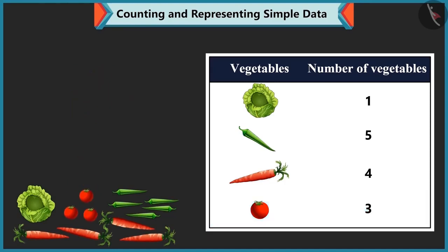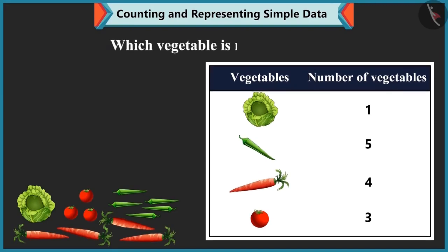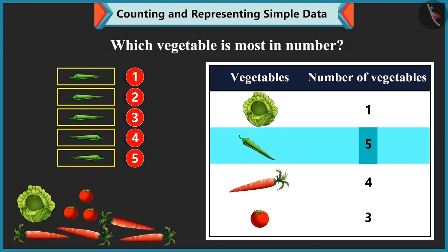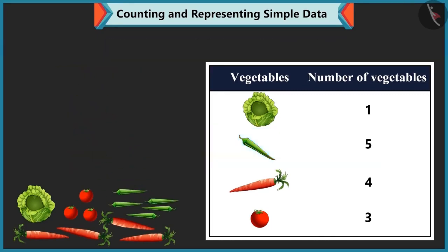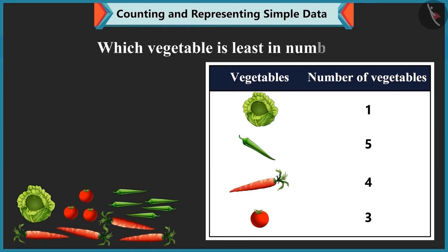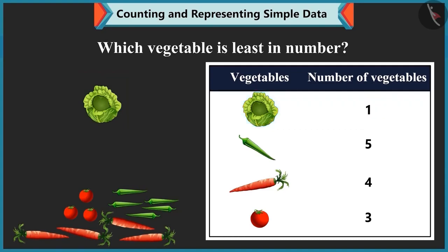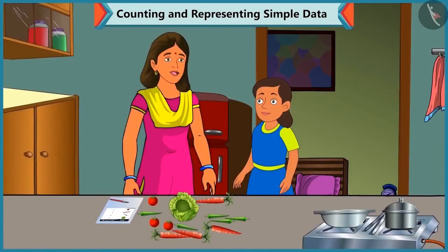Mummy asks which vegetable is most in number. Bubbly thinks and answers: there are 5 chilies, so it is the most. Mummy confirms she is right, then asks which vegetable is least in number. Bubbly replies: there is 1 cabbage, so it is least in number. Mummy says well done.